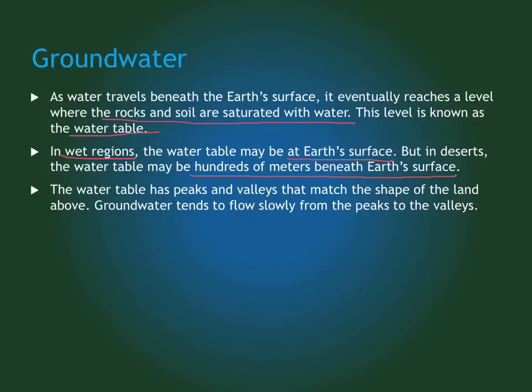The water table mirrors the shape of the land. There are peaks and valleys, and water will flow slowly from the peaks to the valleys, trying to level itself out. It's not a fast process because there are rocks and soil the water has to flow through — it's not empty space. The water is trapped in the spaces between rocks and soil molecules.